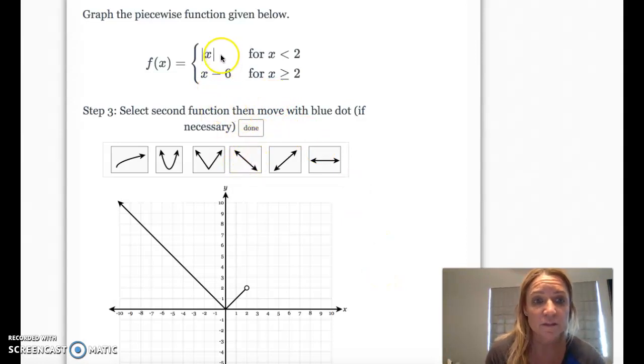And then the second part of this piecewise graph is going to be the line x minus 6. So I'm going to click on a line x minus 6. It's going to be positive, so it should be going up. And it's for when x is greater than or equal to 2.